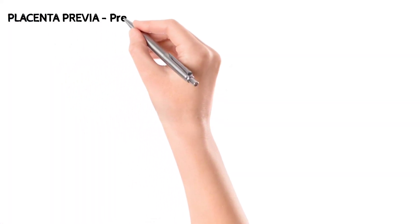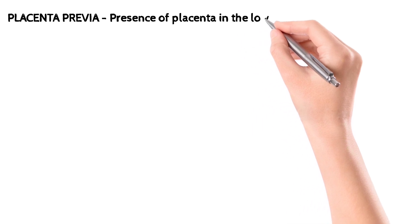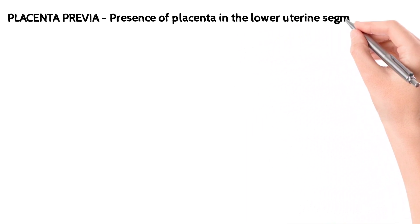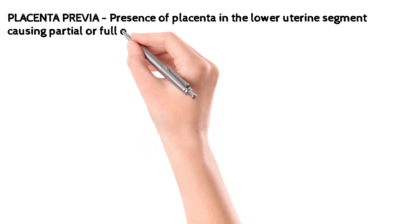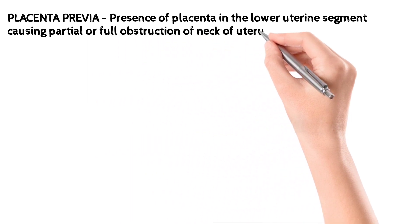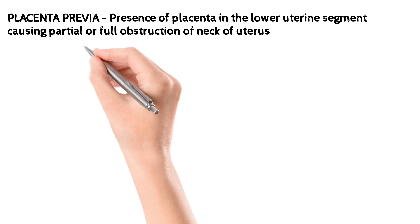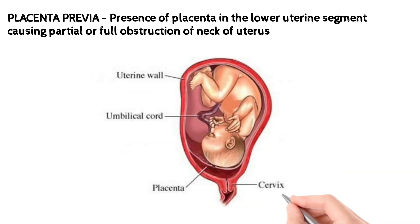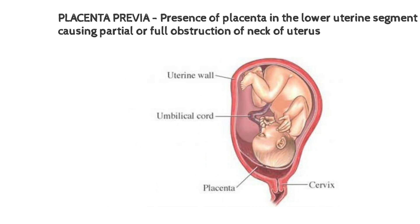Placenta previa is a medical condition in which the placenta is found in the lower uterine segment. This placenta lying in the lower uterine segment can either cause a partial or full obstruction at the neck of the uterus. The image shown here illustrates the uterine wall, umbilical cord, placenta, and cervix — you can see that the placenta is obstructing the neck of the uterus. This is the classic presentation of placenta previa, though it can be further classified by location, which we'll discuss in coming slides.